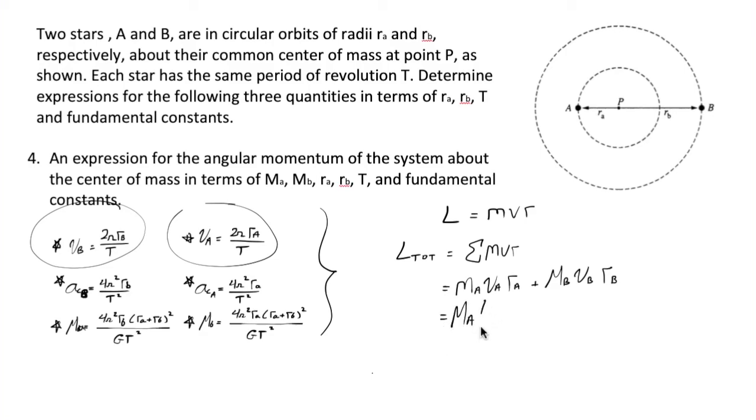So we have MA, 2 pi, RA, over T, another RA, and the same thing over here for star B.